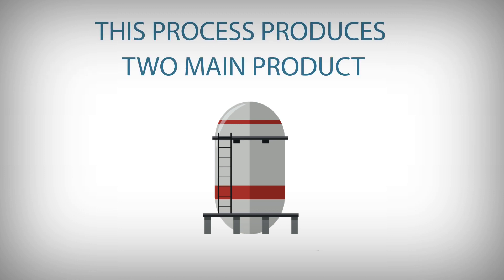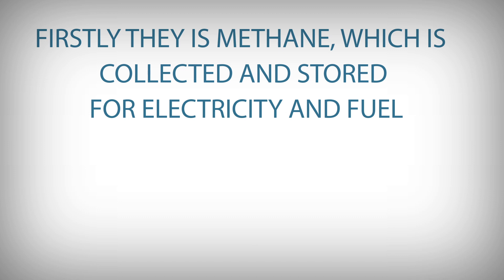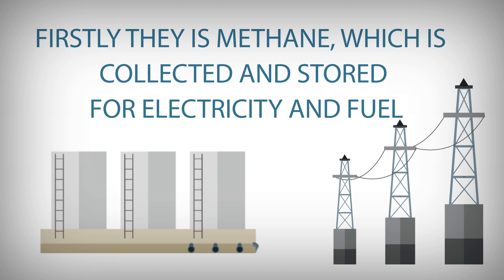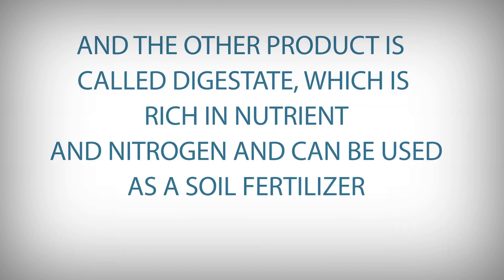This process produces two main products. Firstly, there is methane, which is collected and stored for electricity and fuel. The other product is called digestate, which is rich in nutrients and nitrogen and can be used as a soil fertilizer.